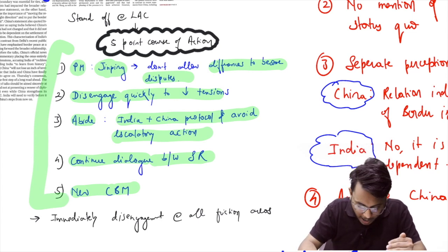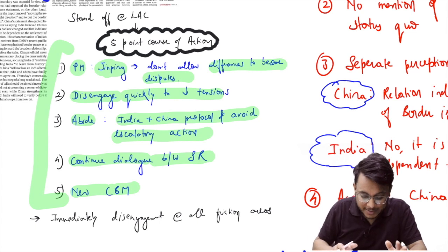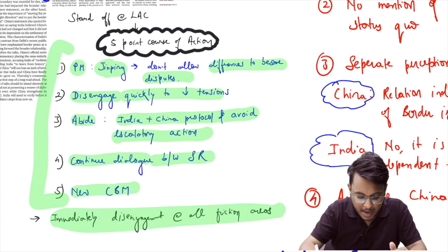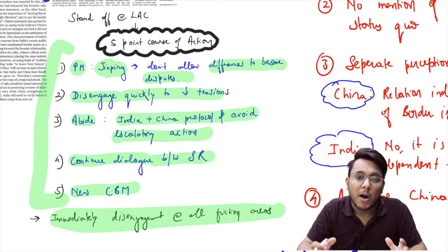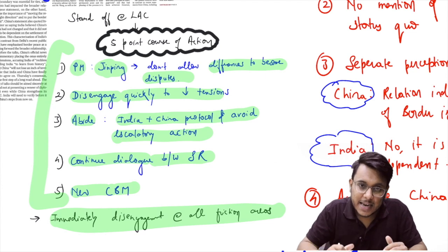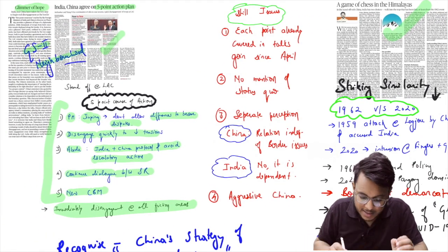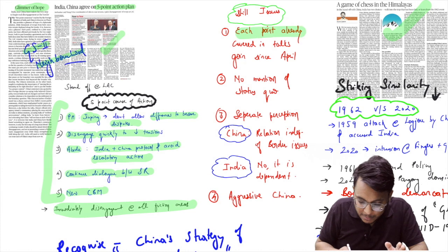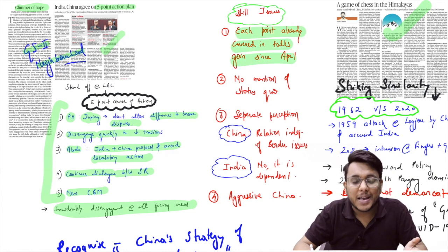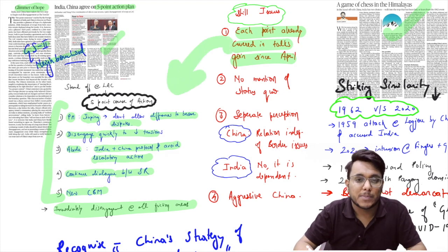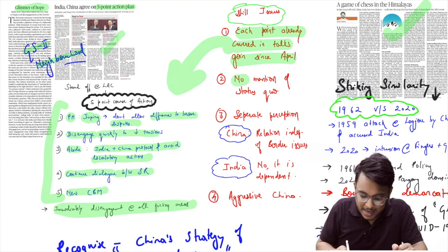It has also been said that immediate disengagement at all friction areas needs to be made. But is this five-point plan enough to de-escalate? Analysis shows: first, these points have already been covered since April as talks were ongoing, but nothing substantial has come of it — it is just a repetition of earlier text.